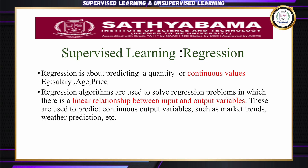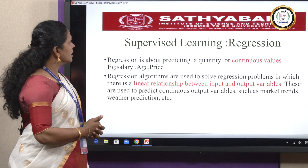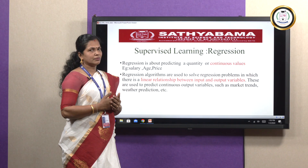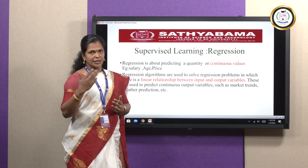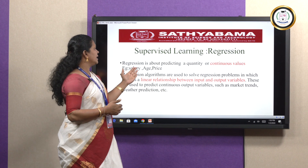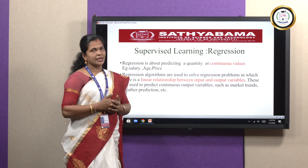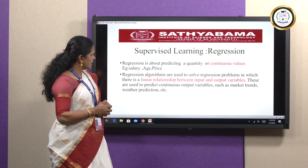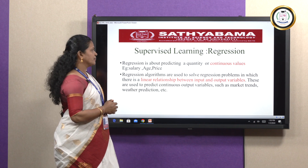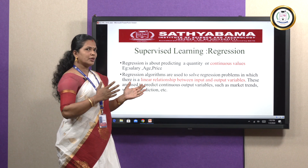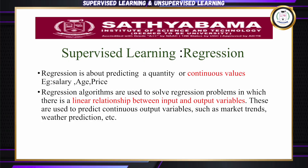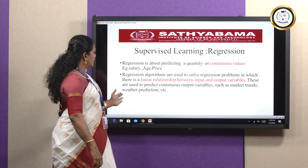The next category is regression. Regression is about predicting a quantity or continuous values — such as salary, age, or price. Classification gives binary values, while regression gives continuous values like 1, 2, 3. Regression algorithms solve problems where there is a linear relationship between input and output variables. These are used to predict continuous output variables such as market trends and weather prediction.